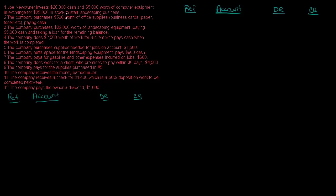When I do journal entries, I like to go through and underline things that I think are important. So let's do that with the first one. Joe New Owner invests $20,000 cash and $5,000 worth of computer equipment in exchange for $25,000 in stock to start a landscaping business. He's investing $20,000 in cash and $5,000 worth of computer equipment in exchange for $25,000 in stock.